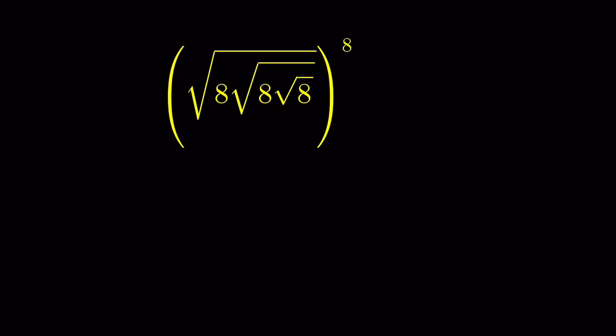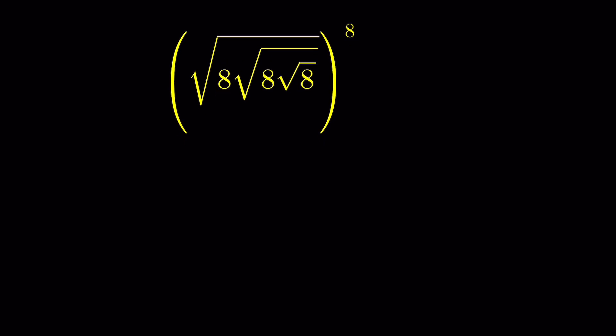We have 8 times square root of 8, times square root of (8 times square root of 8), times square root of that whole expression — this is called a nested radical — and then all raised to the power of 8. How do we solve this? There are two methods we can use.